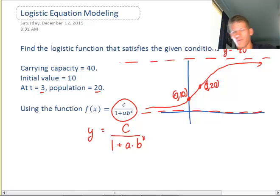So we're going to use that information to solve for the a, b, and c value. The first easiest value to solve for is the carrying capacity, in fact we don't even have to solve for it, it's just what the numerator is. So we would put 40 in the numerator, we'd have 1 plus a, b to the x power.